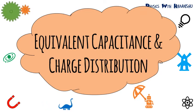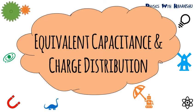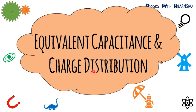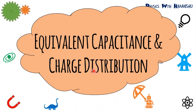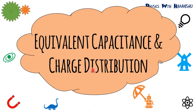Our next topic is equivalent capacitance and charge distribution. We have already covered capacitors in series and capacitors in parallel. This topic includes both — circuits where there are many capacitors, some connected in series and some connected in parallel, and you have to find out the total capacitance of that combination.